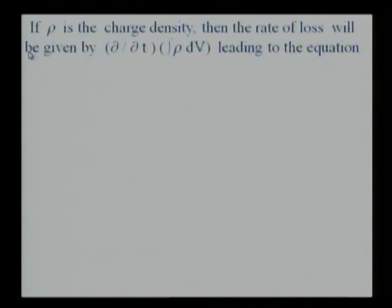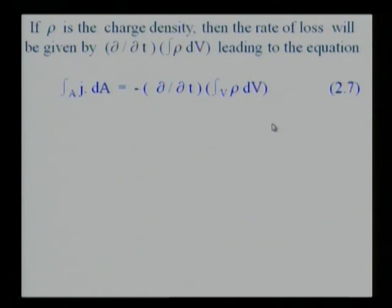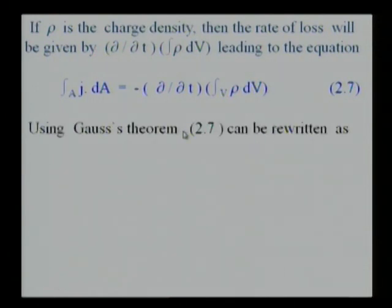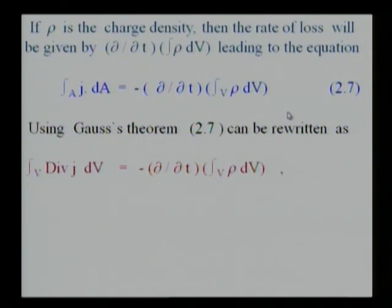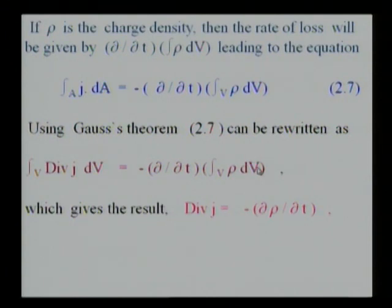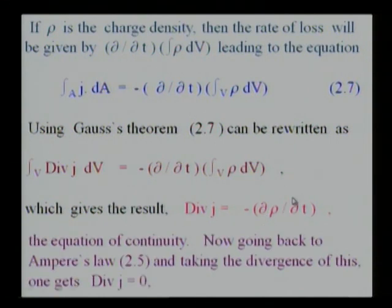If rho is the charge density, then the rate of loss will be given by time derivative of integral rho dV. This leads to the equation integral over A of J dot dA equals minus del del T integral over V of rho dV. Using Gauss's theorem, this can be written as integral over V of div J dV equals minus del del T integral over V of rho dV. This clearly shows that div J should equal delta rho by delta T with a minus sign. This is the equation of continuity.